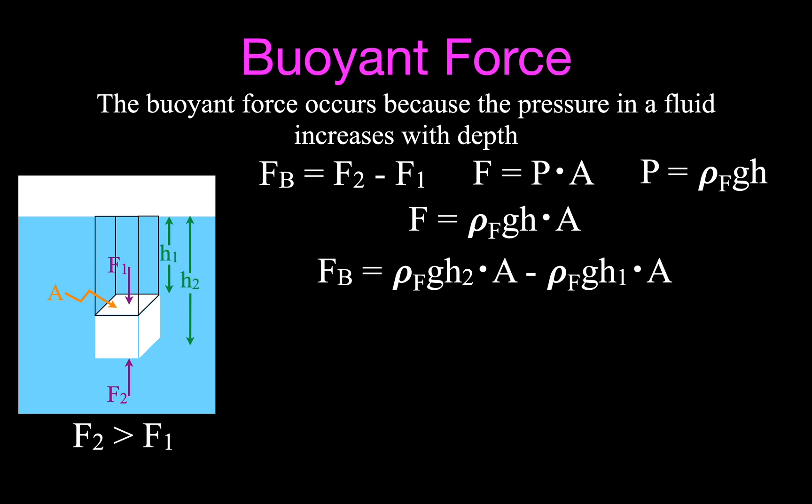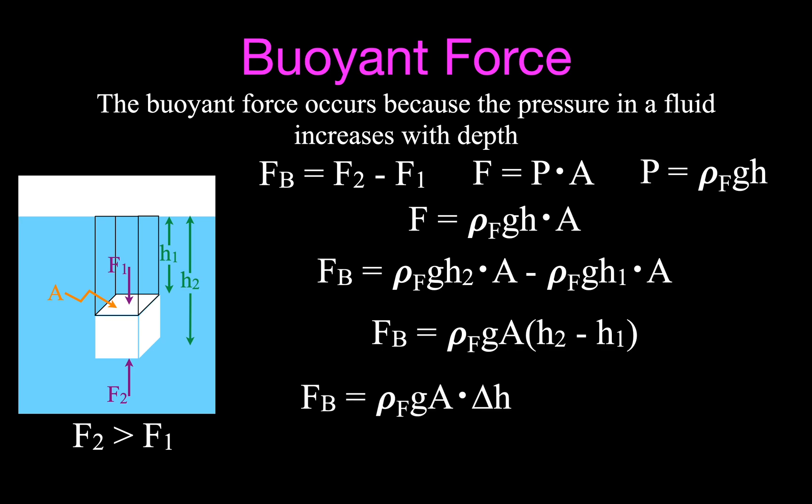In these two terms, the density of the fluid, g, and area are all the same — the only difference is h2 versus h1. Factoring out the density, g, and area from both terms gives: buoyant force equals density of fluid times g times area times (h2 minus h1). Note it's the density of the fluid, not the density of the object. h2 minus h1 is simply the change in height, and area times height equals volume. So the buoyant force equals density of fluid times g times volume of the object.